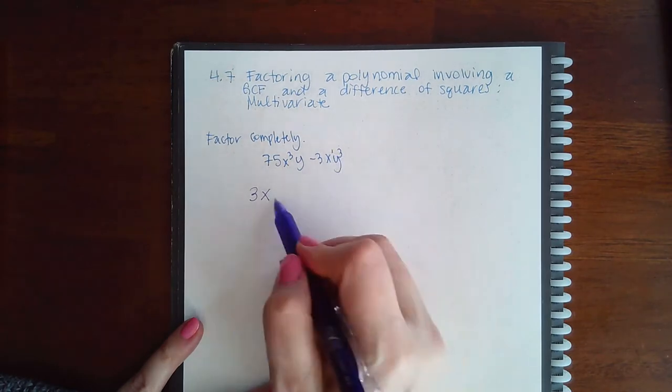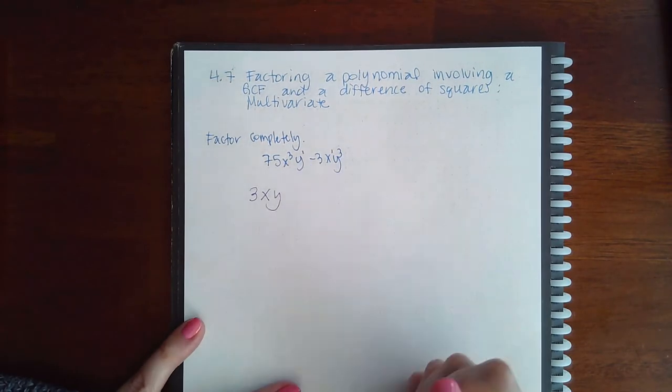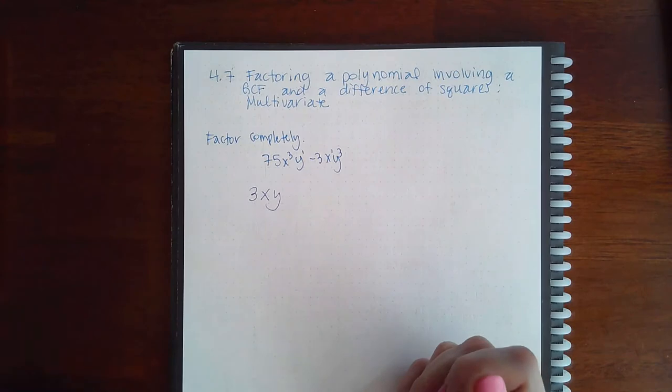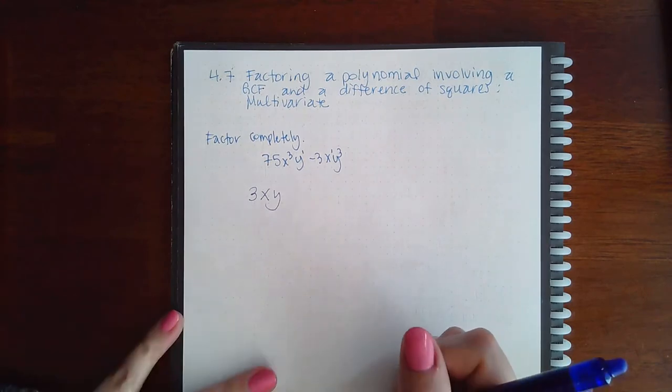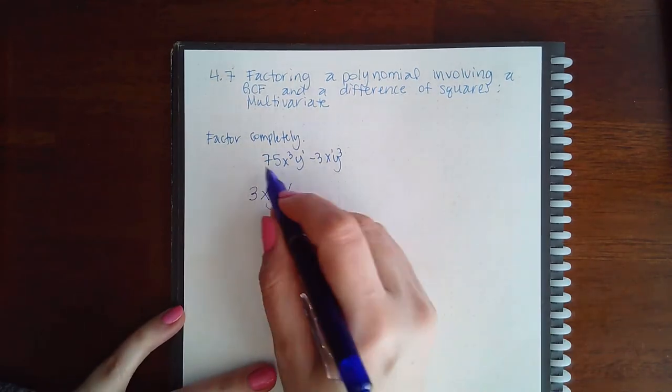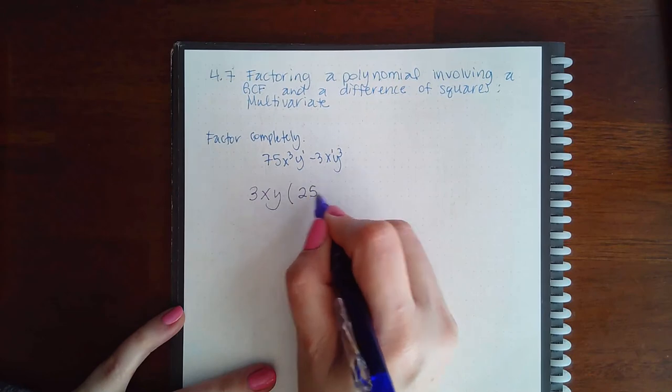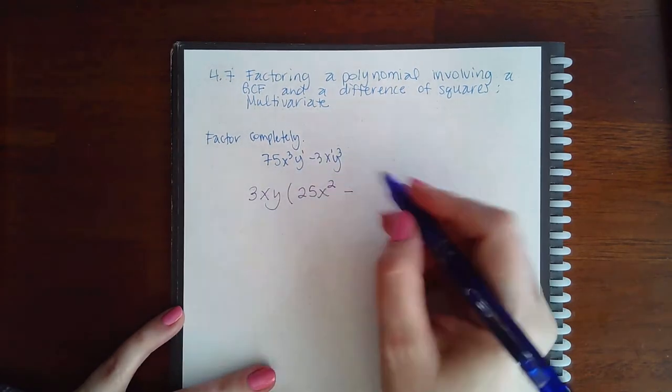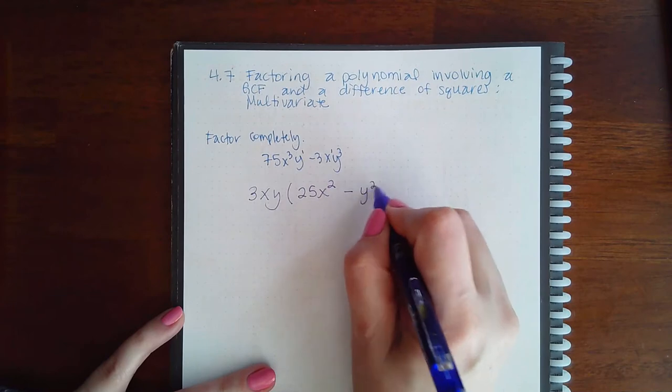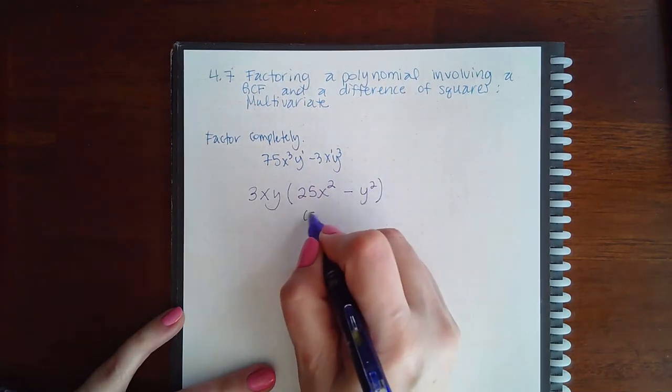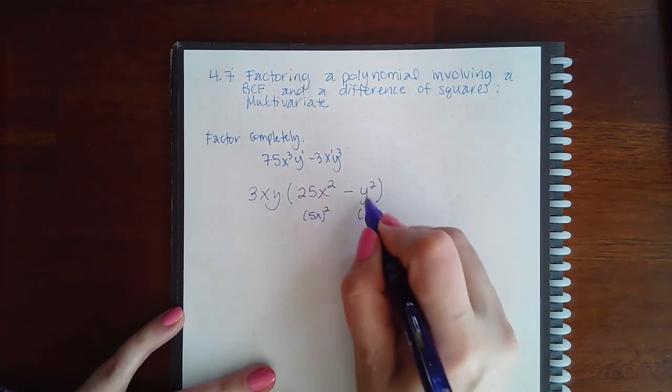Only one x, and they have a y in common, but only one. For the GCF, we must take out the lowest exponent on those variables. That leaves me with 25x². The 3, x, and y are gone from the first term. From the second term, we have y². Here I have a 5x that's being squared.